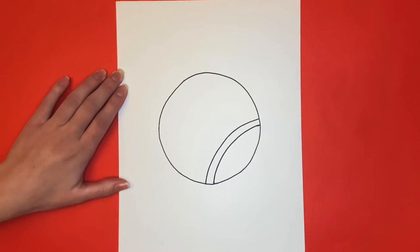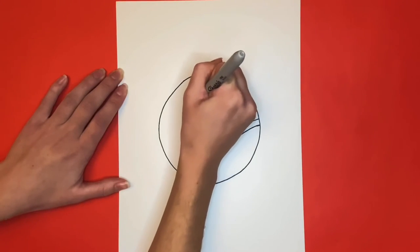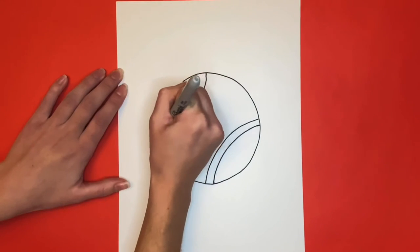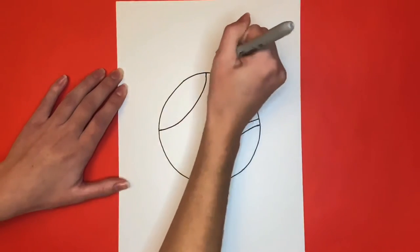Now we're going to move to the top left part of the circle. We will draw another big curved line; this one will be curving upwards. Then we will draw another curved line just like that one, but a little bit below it.